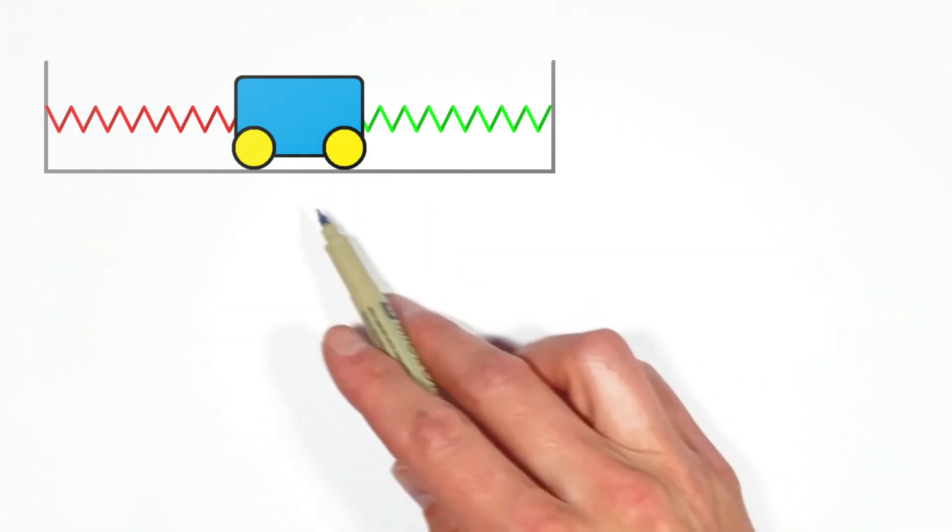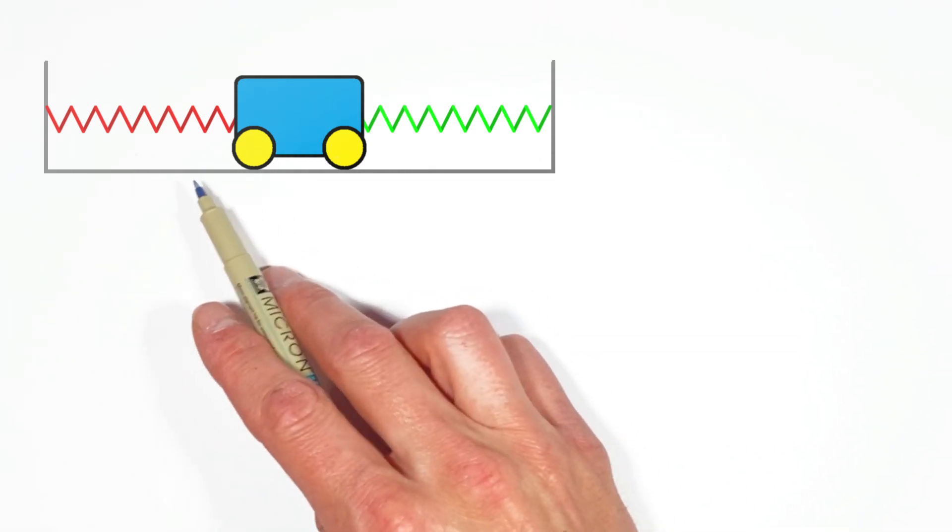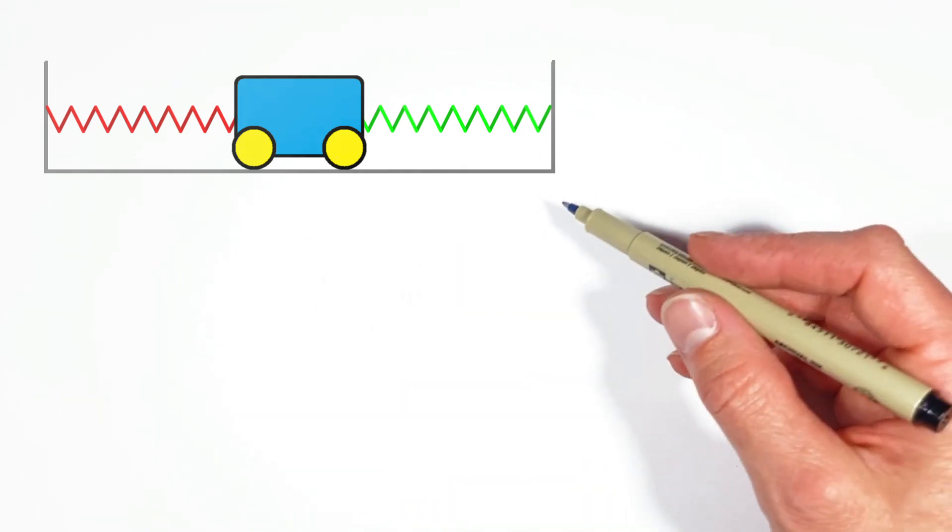And the question is, if we force or cause this cart to move side to side, do we treat these two springs as though they're in series, or do we treat these two springs as though they're in parallel with one another?